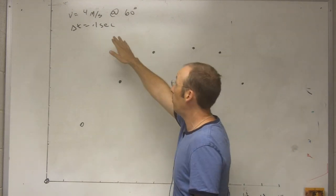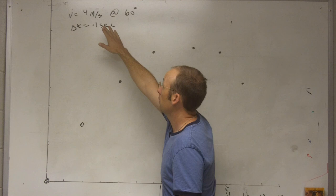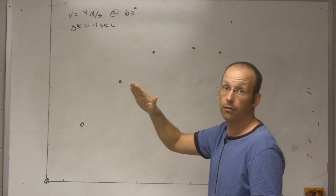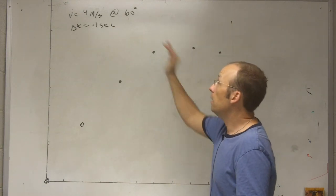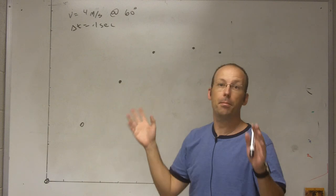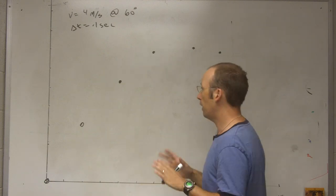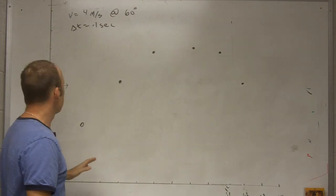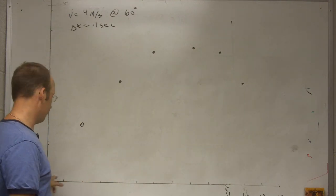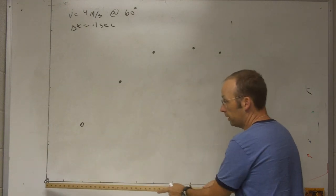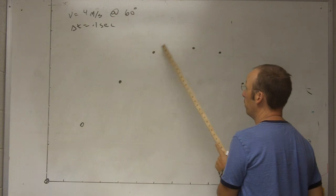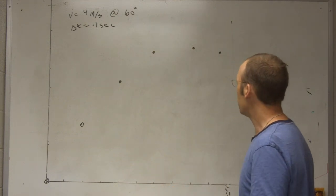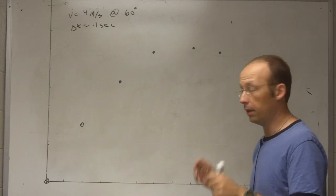Suppose that I shoot a ball or something and I have a speed of 4 meters per second and I shoot it at an angle 60 degrees above the horizon. And then every tenth of a second I take a picture. So I've sketched this out here. I've drawn an x and y axis to scale. And then I have a ball at 0 seconds, at 0.1 seconds, 0.2, 0.3, 0.4, 0.5, 0.6 seconds. It's mostly to scale but not perfect. I think we'll live.